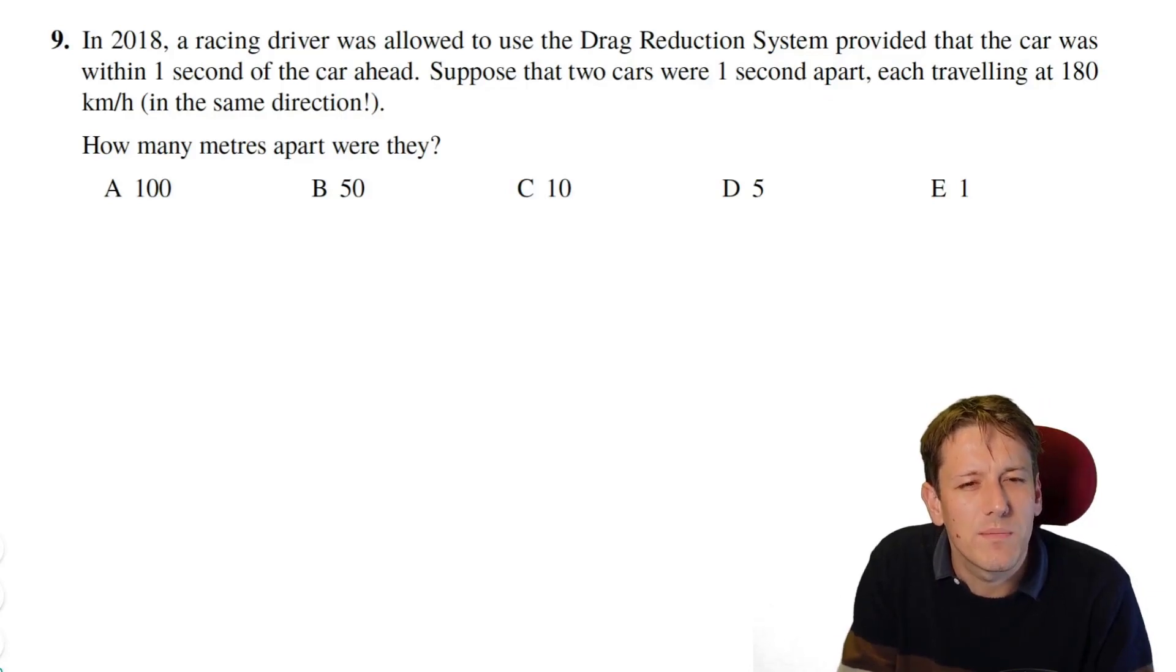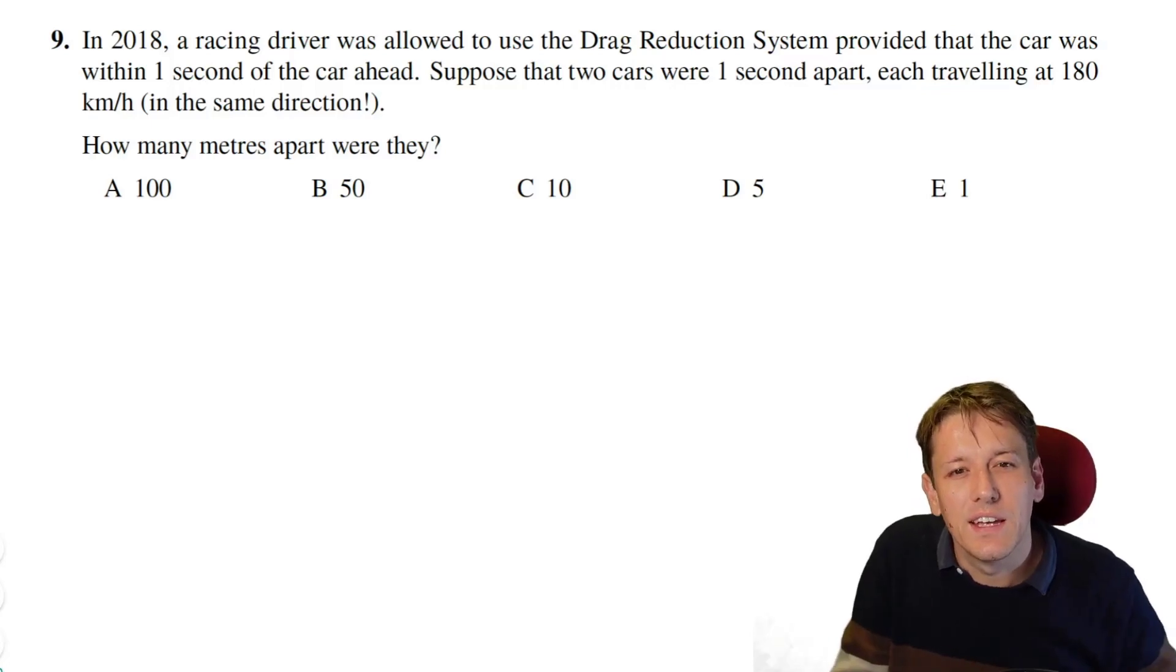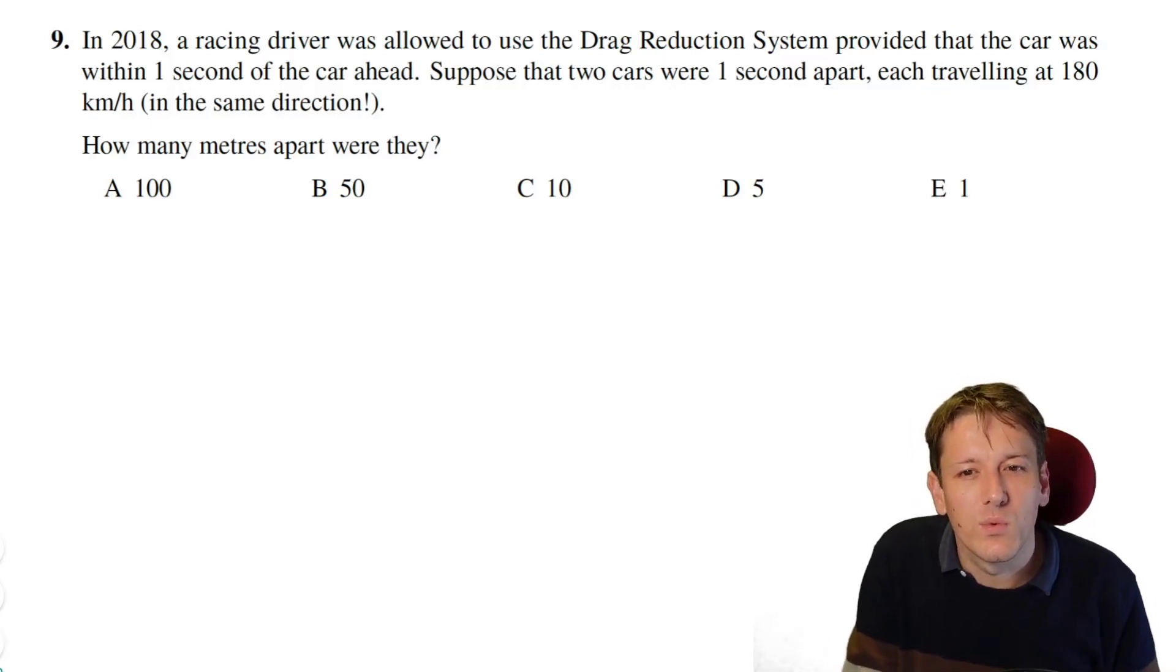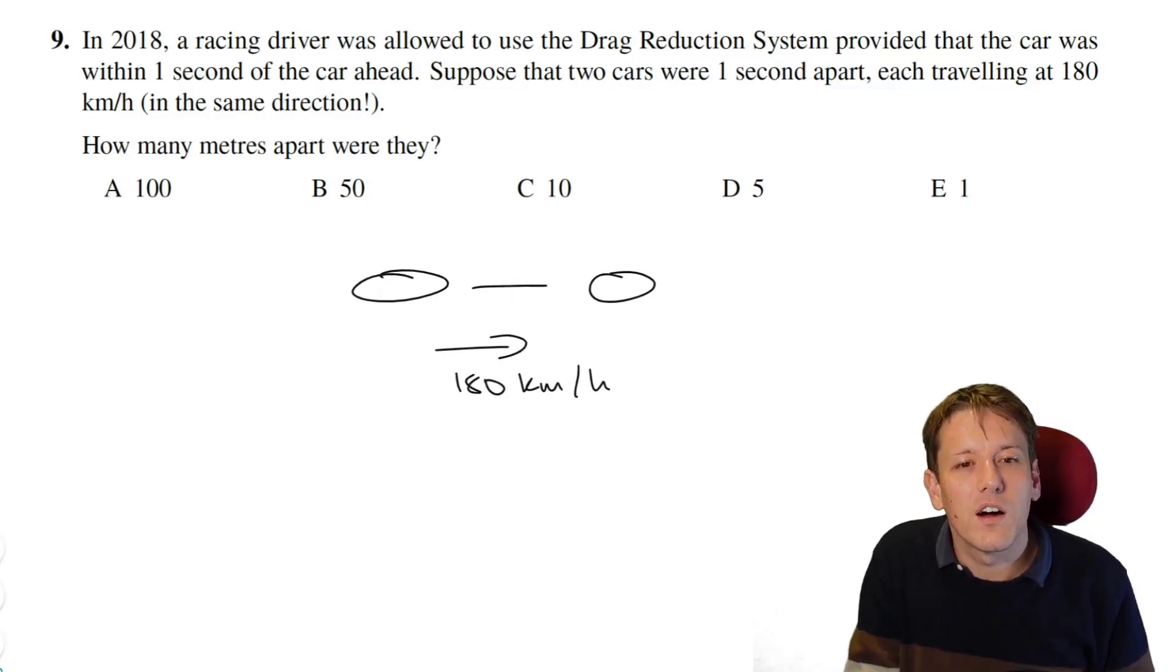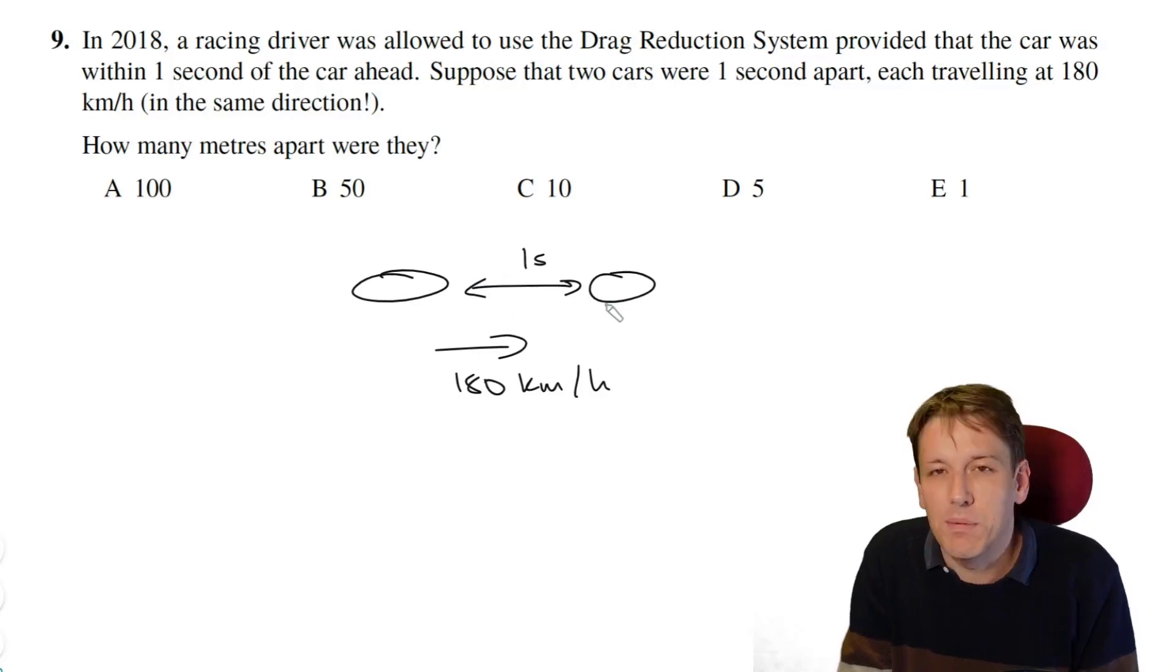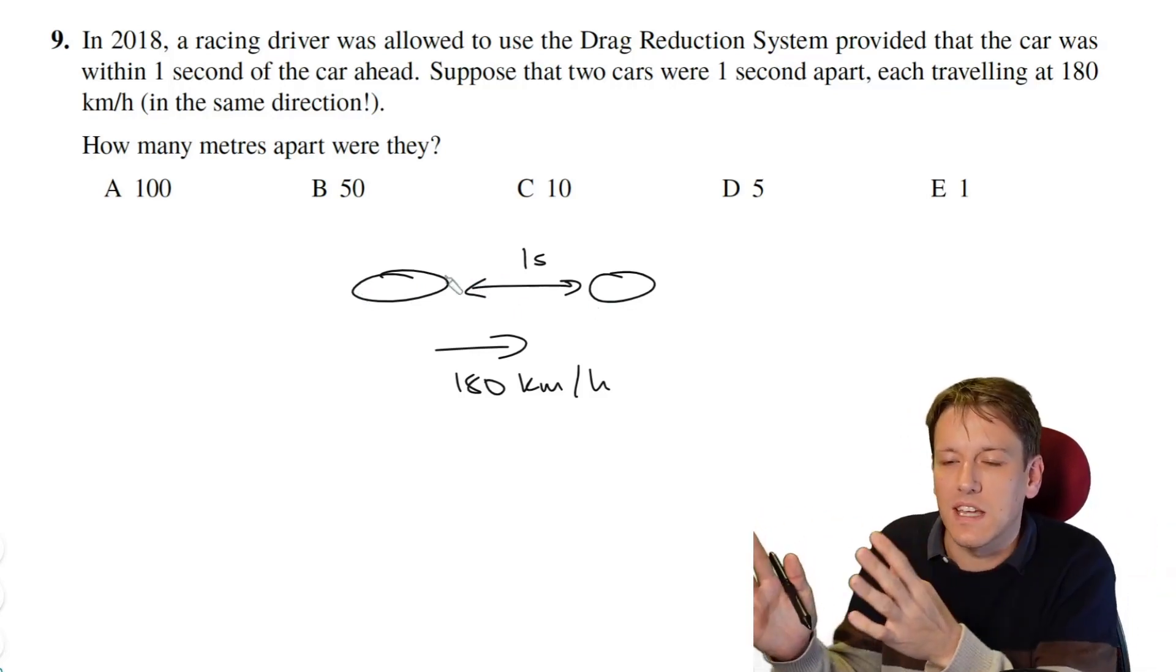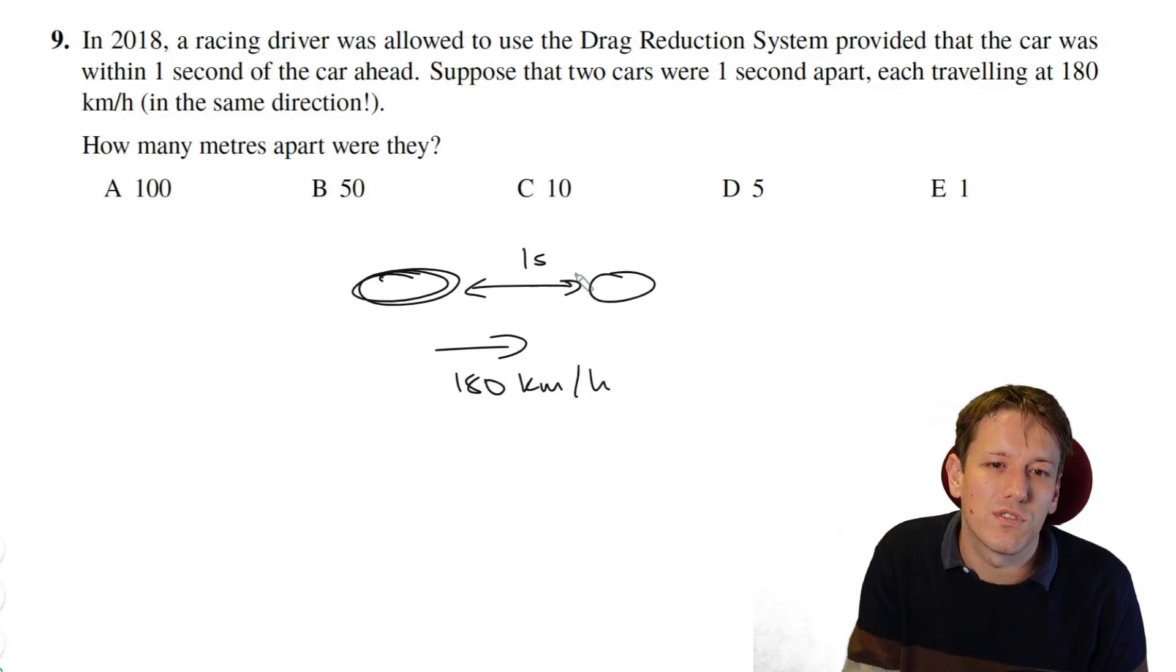Question nine, we've got a racing driver being allowed to use the drag reduction system, provided that the car is within one second of the car ahead. And it says, suppose there are two cars that are one second apart, and they're each travelling in the same direction, at 180 kilometres per hour, how many metres apart are they? Well, really this question then is just asking you, in one second, how far would these cars travel? That's the distance they are apart too, they're both going at the same speed, they stay the same distance apart, so it's just saying, how far would this travel in one second to get here?